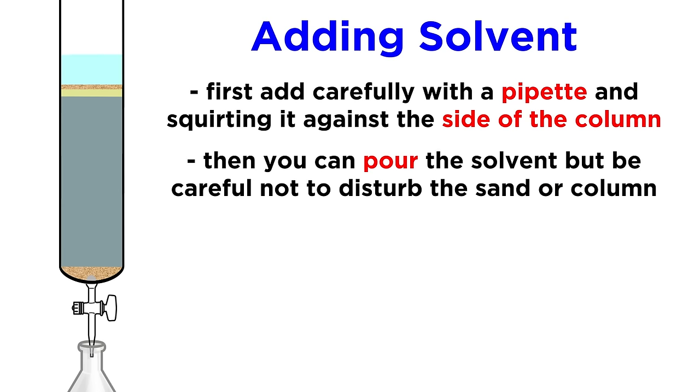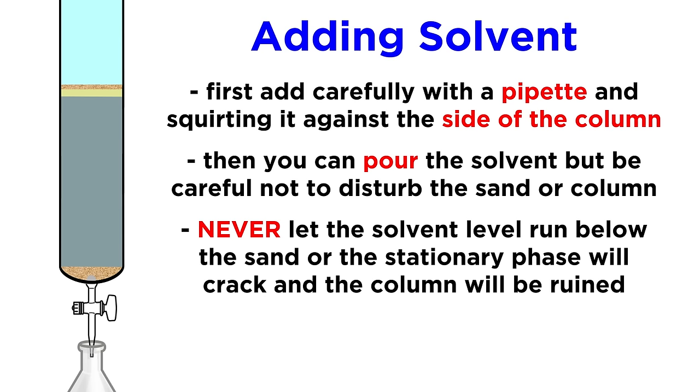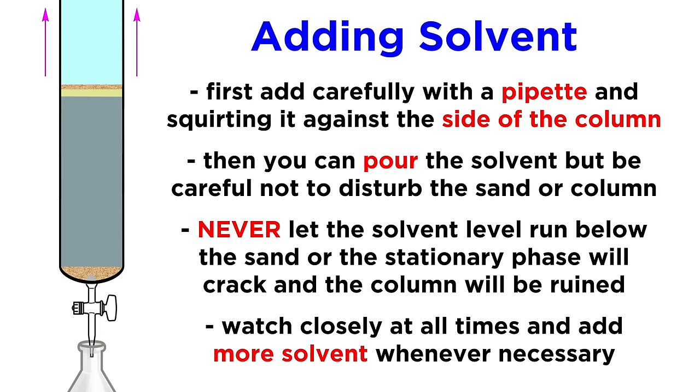At this point you can carefully pour in more solvent from a beaker, just continue to ensure that the sand is not disturbed, and in general, once we begin to run the column, never ever let the solvent level go below the sand, or the stationary phase will dry out and crack. The solvent level should always be well above the sand, so monitor and add more as necessary.